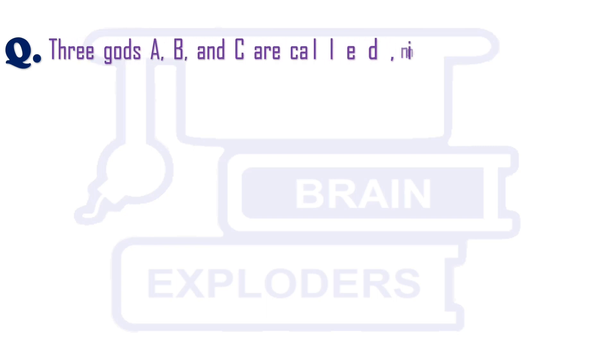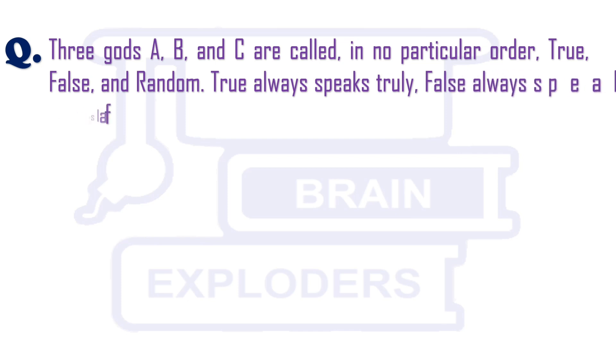Three Gods A, B and C are called in no particular order. True, False and Random.